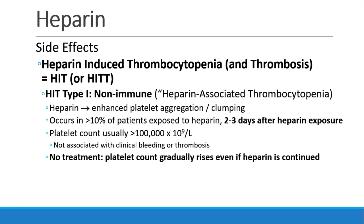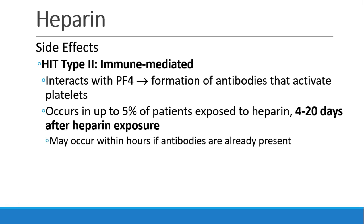There is something called heparin-induced thrombocytopenia and thrombosis, called HIT. There are two types. HIT type 1 is nonimmune, and we call this heparin-associated thrombocytopenia. The heparin leads to enhanced platelet aggregation and clumping. It occurs in more than 10% of patients exposed to heparin for a few days, but their platelet count usually remains above 100,000, and they don't have a lot of clinical bleeding or thrombosis. The platelet count will gradually rise again even if you maintain heparin, so no treatment is typically indicated. HIT type 2 is immune-mediated. There's a PF4 receptor that leads to formation of antibodies that activate the platelets. This occurs in about 5% of patients exposed to heparin, and HIT can occur anywhere from 4 to 20 days after exposure, although if antibodies are already present from a prior exposure, HIT can occur within hours.